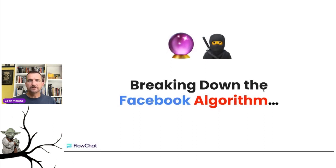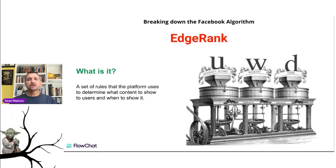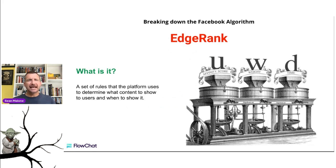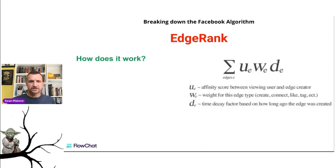So what on earth is the Facebook algorithm? There's this term called edge rank. We don't know if it's a formal term or not, but edge rank is the name that the Facebook algorithm has been given. It works off affinity score, weight and time. There's a formula that was created to measure edge rank. Nobody truly knows exactly what the algorithm spits out, but just know that it's called edge rank. It's a set of rules that the platform uses to determine what content should be shown to users and when to show it.